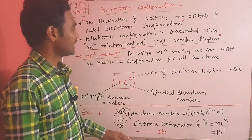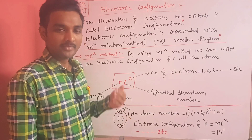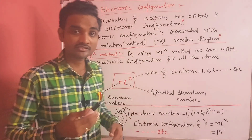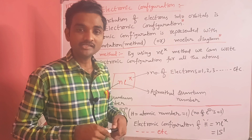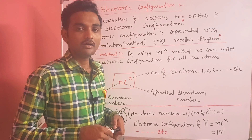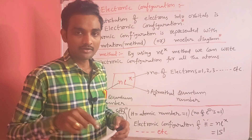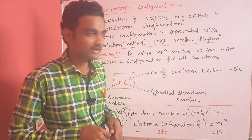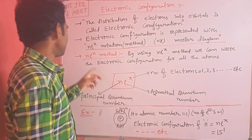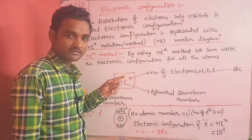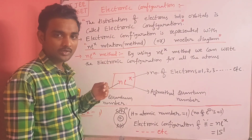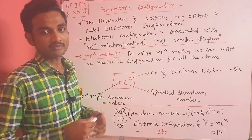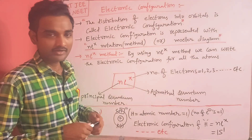Electronic configuration is represented with analytical notation, or by using the Moeller diagram. We already discussed the Moeller diagram. If you haven't seen it, the link will be given in the description and in the cards. Now let me explain the analytical method. Using the analytical method, we can write the electronic configuration of all atoms.